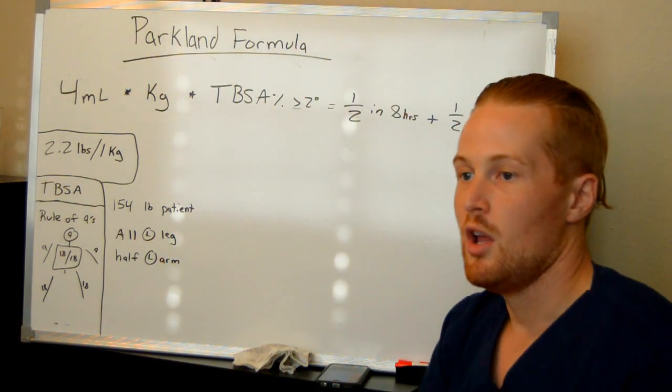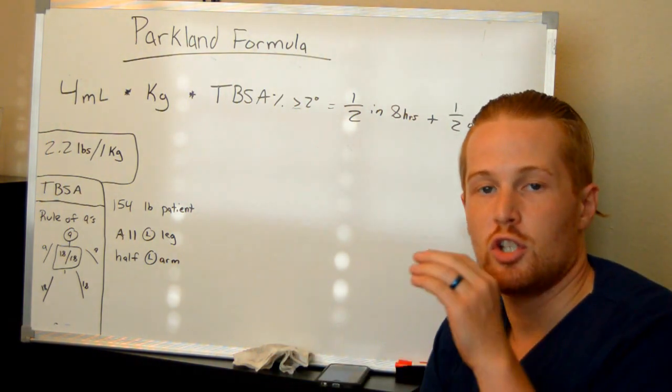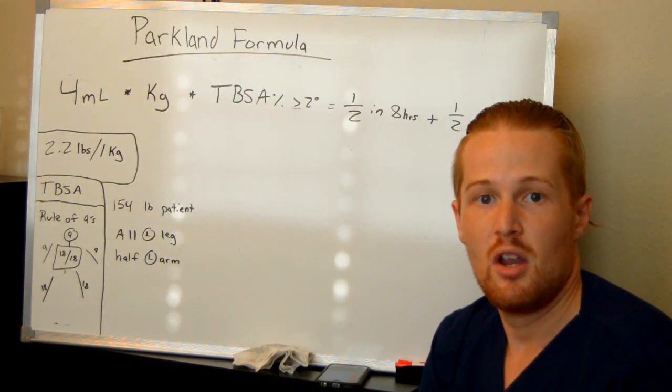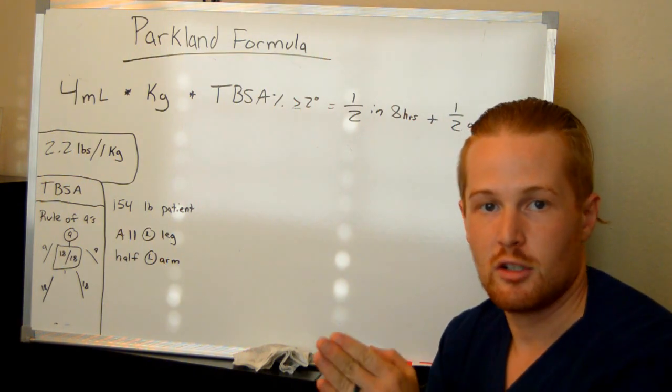What's a second degree burn? First degree would be a sunburn, second degree would be anything above just light pinkness with very light swelling. So if you start seeing blisters or extreme swelling, redness, white, black, brown, tan skin, that's going to be counted.